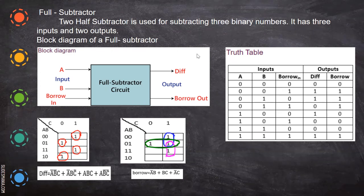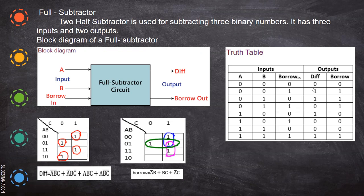The inputs are A, B, and borrow-in, and the outputs are difference and borrow-out. This is the truth table for that. Now if you find the ones at their respective places and group them in the Karnaugh map, you will get the map like this.